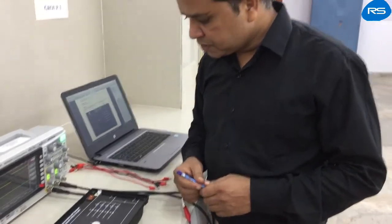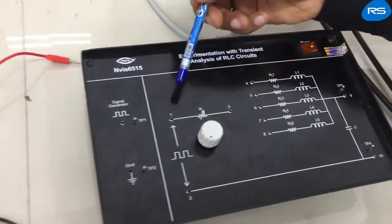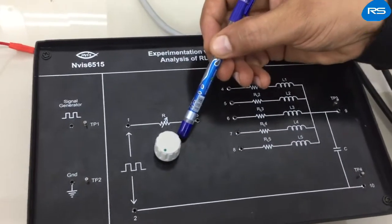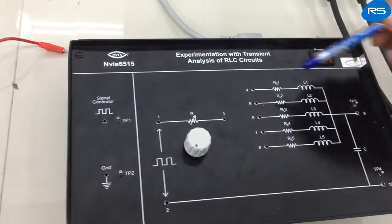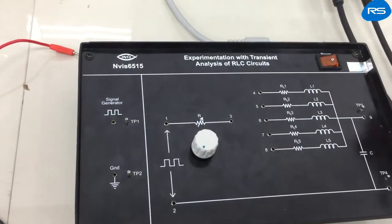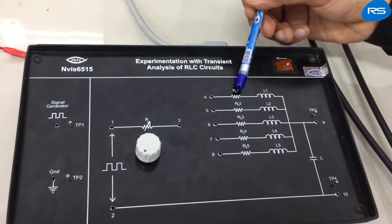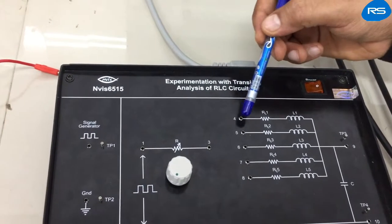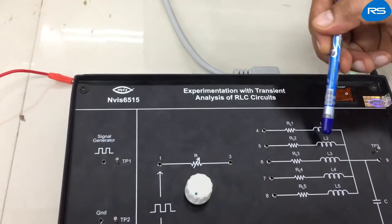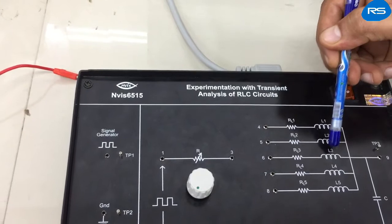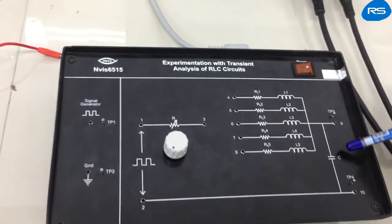Let me introduce the various components on the kit. We have a potentiometer with variable resistance from a few ohms to kilohms. We have series combinations of resistances and inductors: RL1, L1, RL2, L2, RL3, L3, RL4, L4, RL5, L5, and a capacitor.